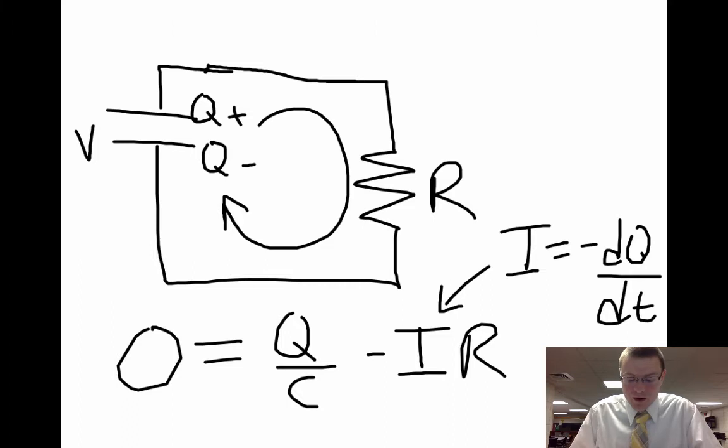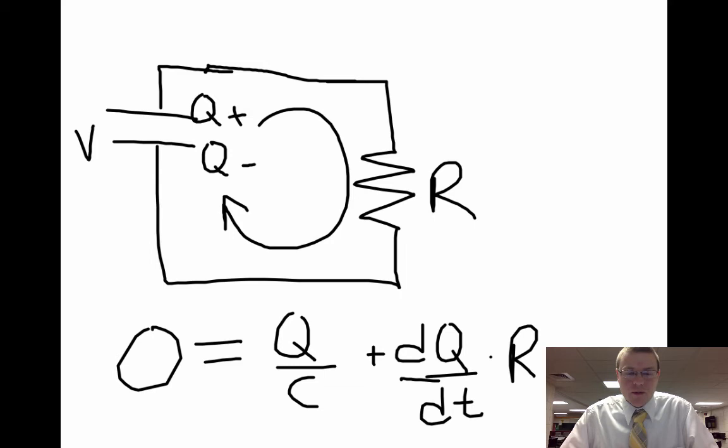So with the dQ/dt, I'm going to put that in for my current, and our equation changes just a bit. So I get plus dQ/dt times R.